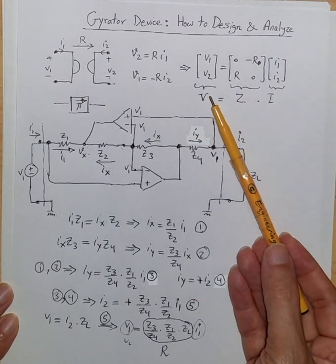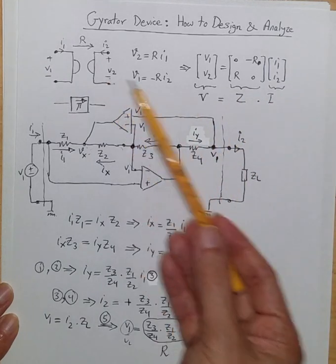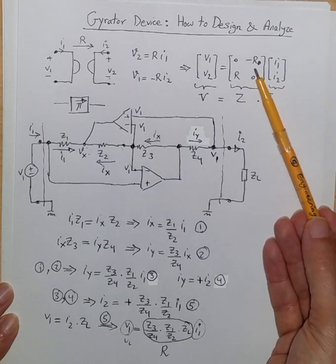Or we can just say voltage matrix is related to current matrix for this two-port using the impedance matrix Z that is completely and fully anti-symmetric.